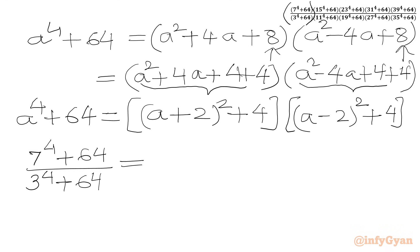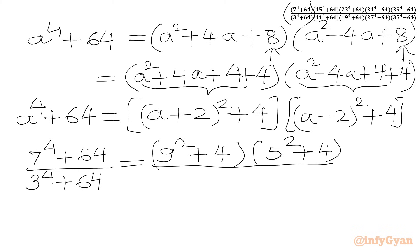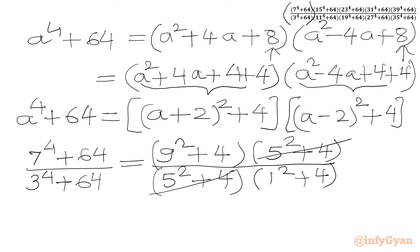Using the factorization with a = 7 in the numerator: (a + 2) = 9, so we write 9² + 4; (a − 2) = 5, so 5² + 4. In the denominator with a = 3: (3 + 2) = 5, so 5² + 4; (3 − 2) = 1, so 1² + 4. We cancel (5² + 4) from numerator and denominator, leaving (9² + 4) in the numerator and (1² + 4) in the denominator.